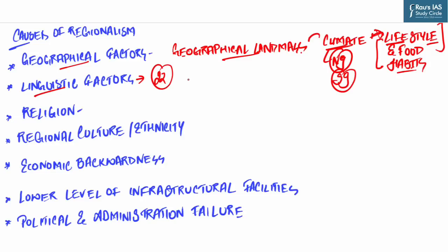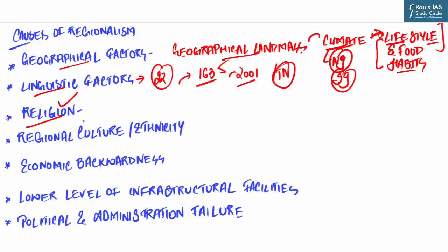The next cause is linguistic factors. India has 22 official languages recognized by the Constitution, but there are around 1,635 mother tongues as per the 2001 census. Language is an important factor in integrating people, and emotional attachments develop consequently, leading to demands for linguistic states — for example, south Indian states like Tamil Nadu. Next is religion, which is also a major factor — for example, the violent demand for an independent Khalistan was based on Sikh religion.